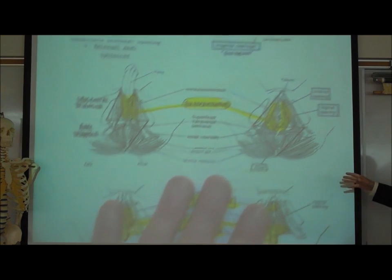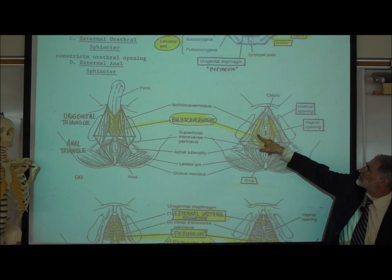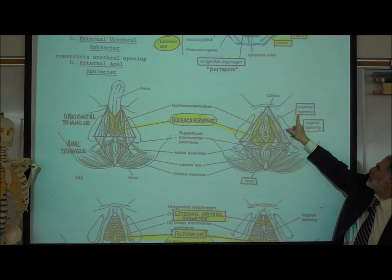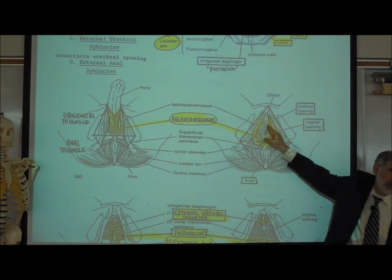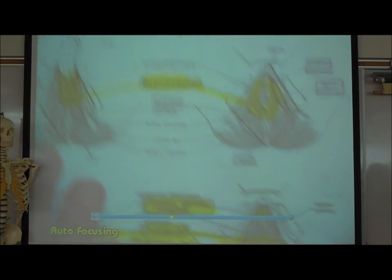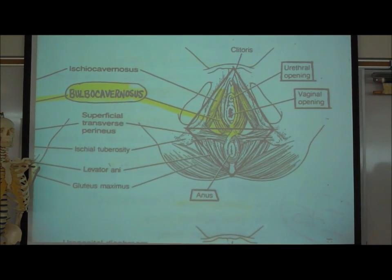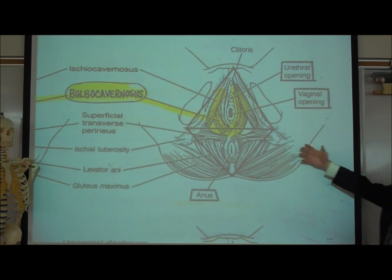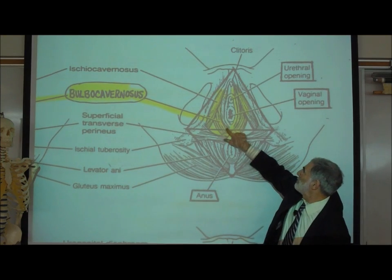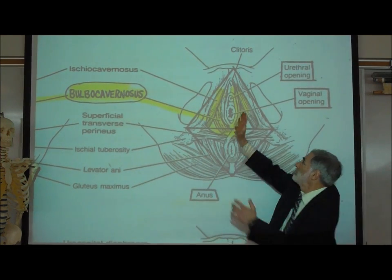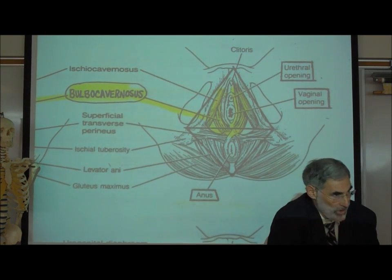In the female, the bulbocavernosus muscle is right here. It circles. It encircles both the urethral opening and the vaginal opening both. So it encircles around both of them. So if a woman similarly were urinating, peeing, so if she tightens the bulbocavernosus muscle, it would squeeze both these structures simultaneously and stop the urine from flowing out midstream.